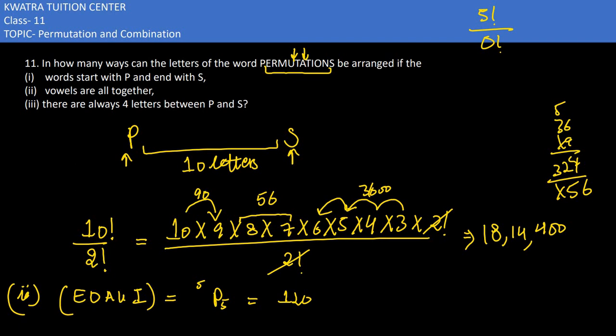Now let's see what will happen in the whole letter. If we use EOAUI as one unit, the rest are P, M, T, T, N, S. This would be considered as 1, 2, 3, 4, 5, 6. That's 7... I think I have missed something. Yeah, R is missing - R here. So 7, and we will consider this total as 8.